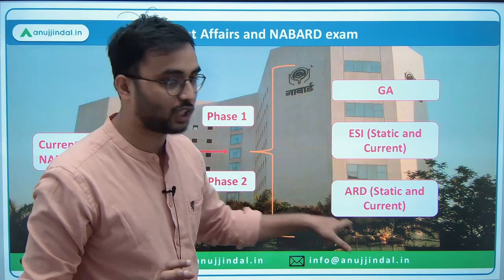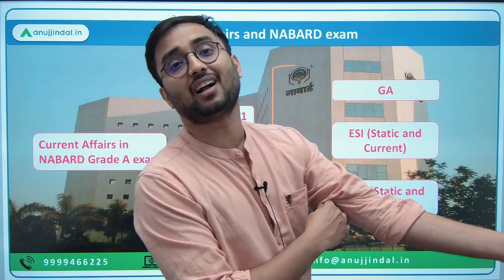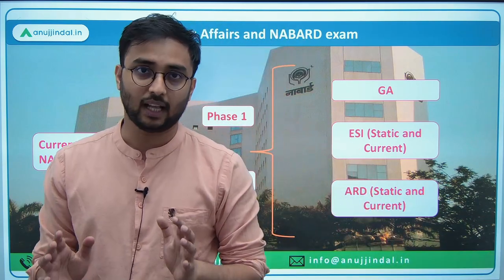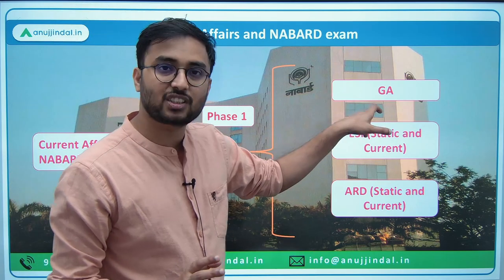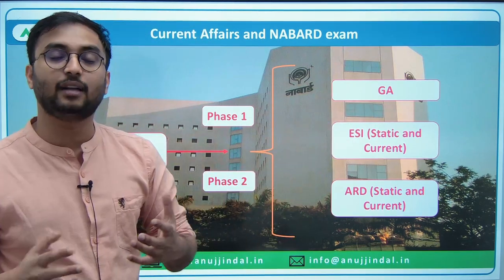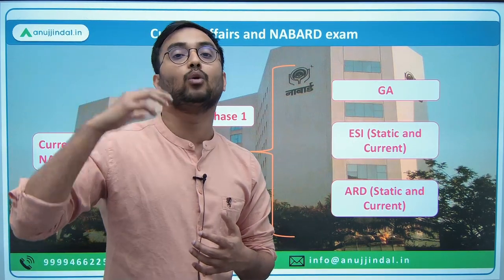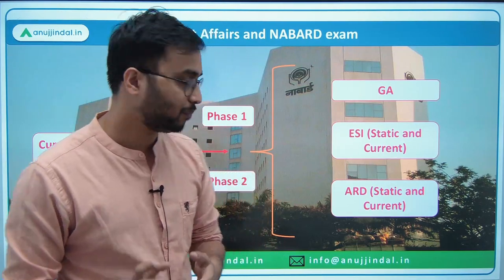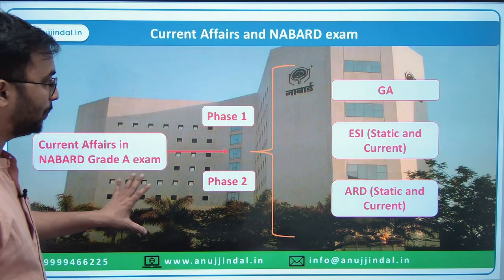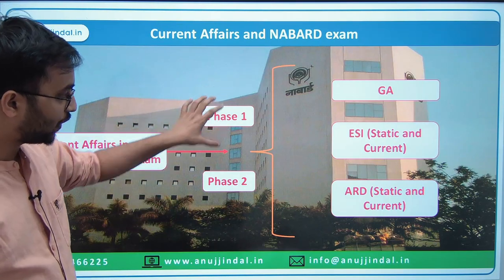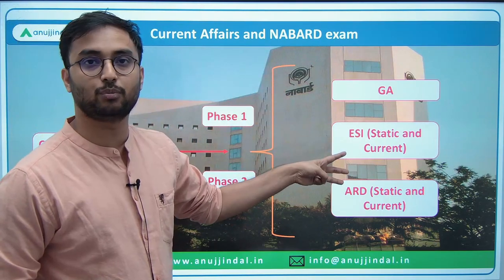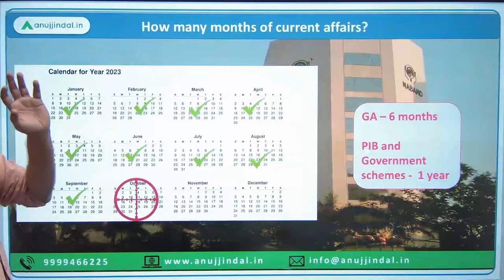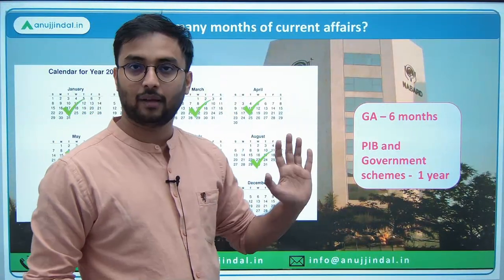These are the three subjects from which you will have to cover current affairs compulsorily. In both Phase 1 and Phase 2, current affairs could be asked from General Awareness, ESI, and ARD. Let's now understand each subject in detail — the sources, strategy, and how current affairs is asked.